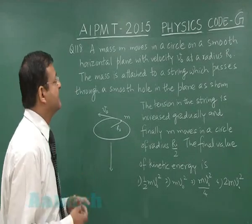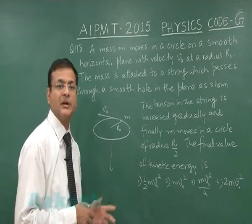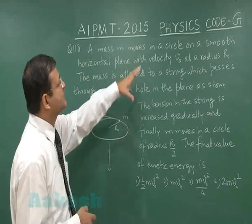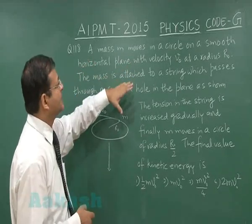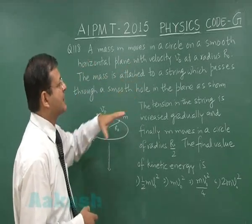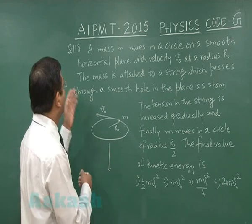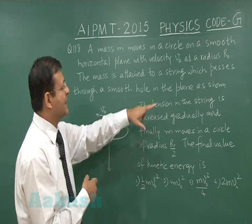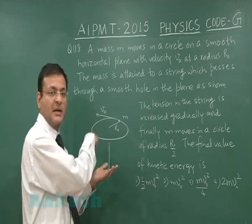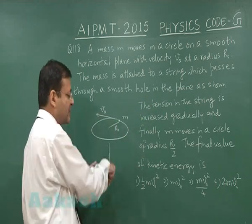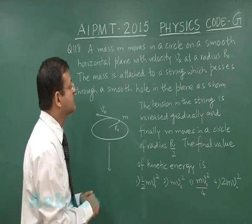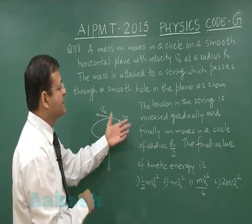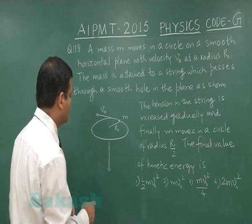Here is question 118, based on conservation of angular momentum. A mass m moves in a circle on a smooth horizontal plane with velocity V₀ at radius R₀. The mass is attached to a string which passes through a smooth hole in the plane as shown. Maybe it's on a table with a hole through which the string is passing and going down. You're pulling this string downwards.